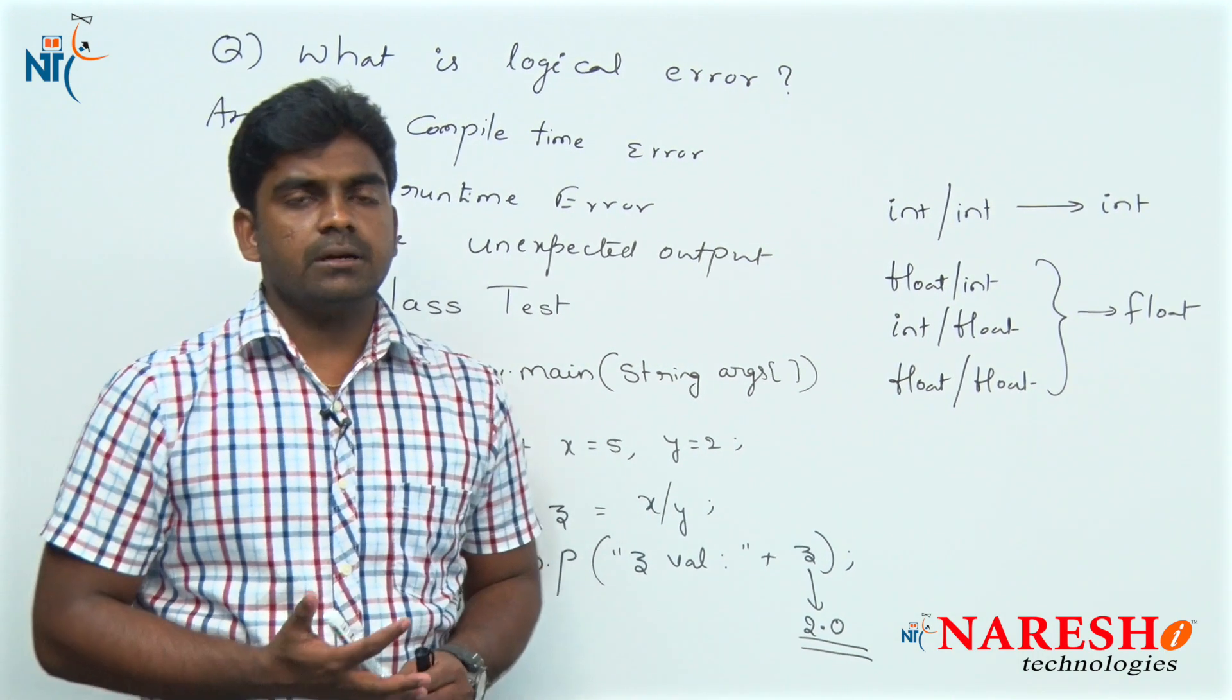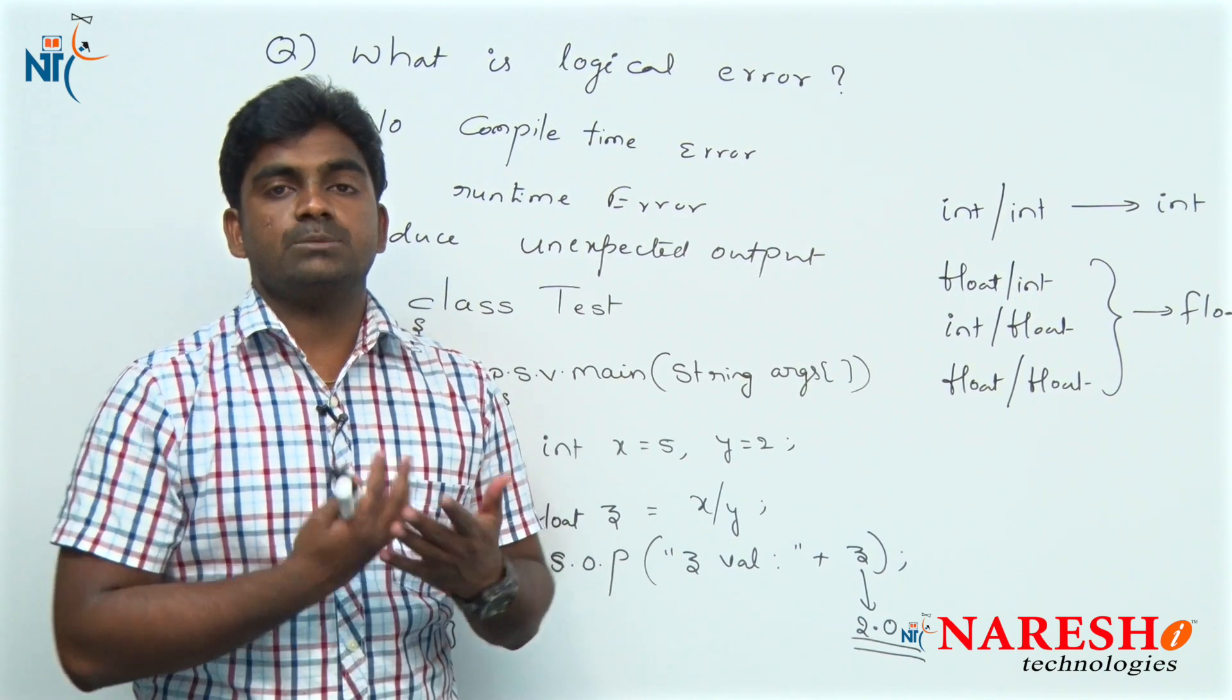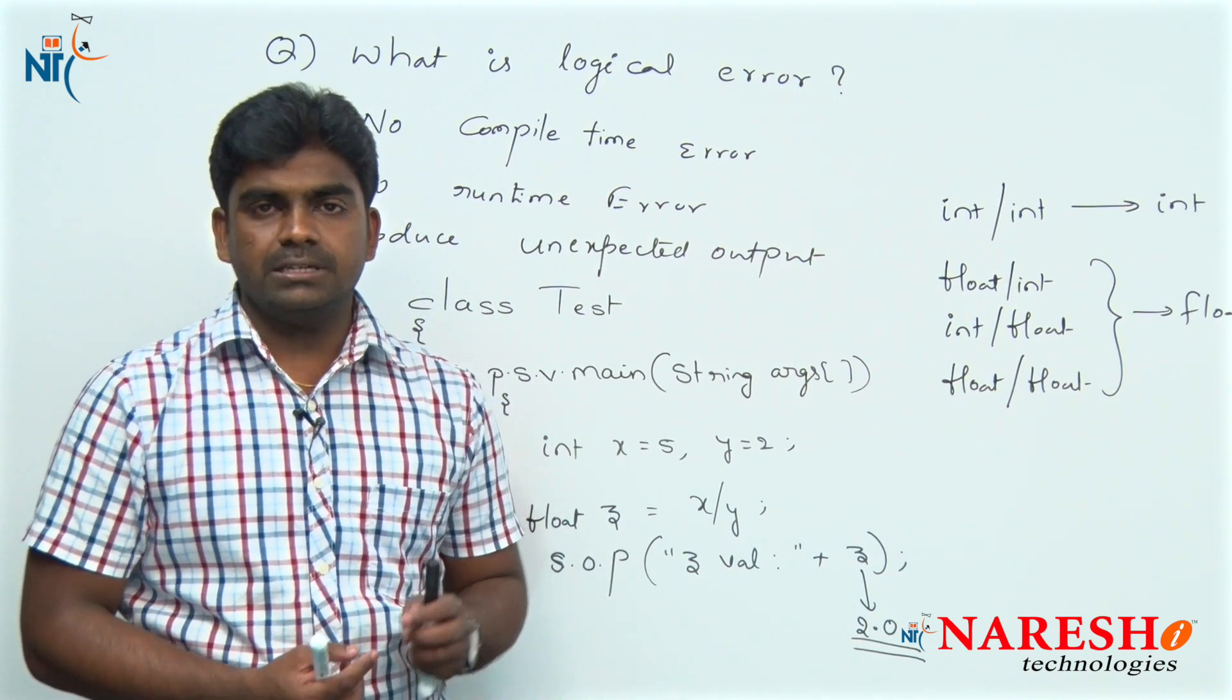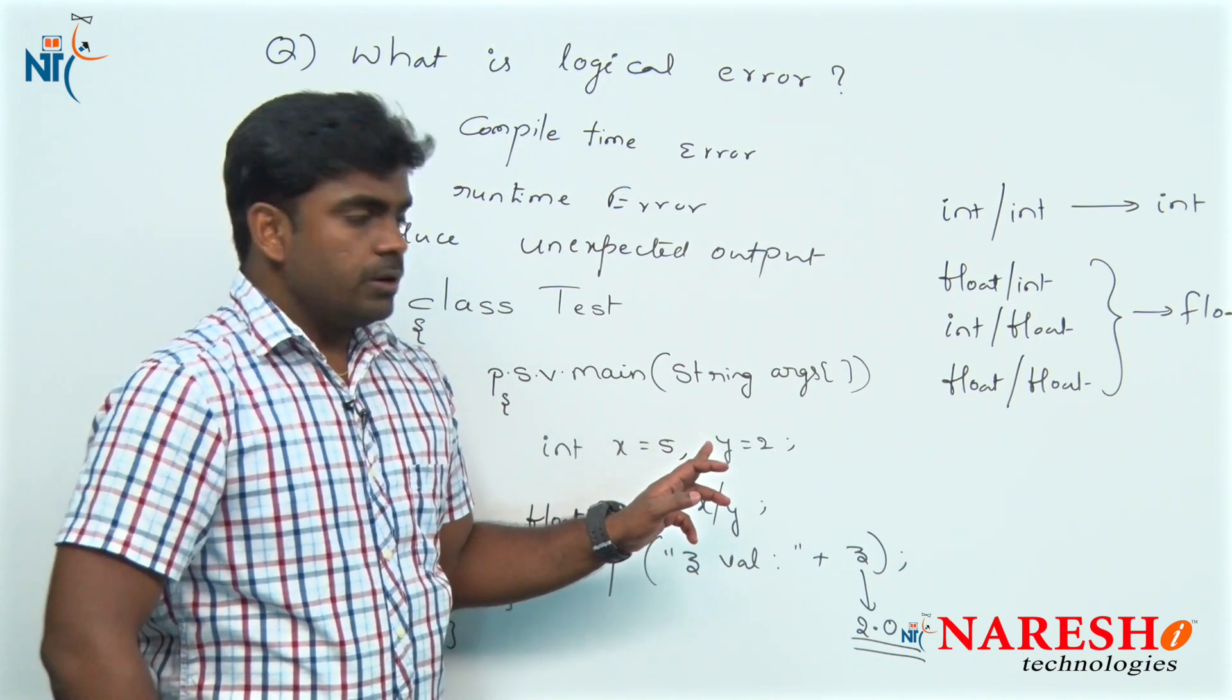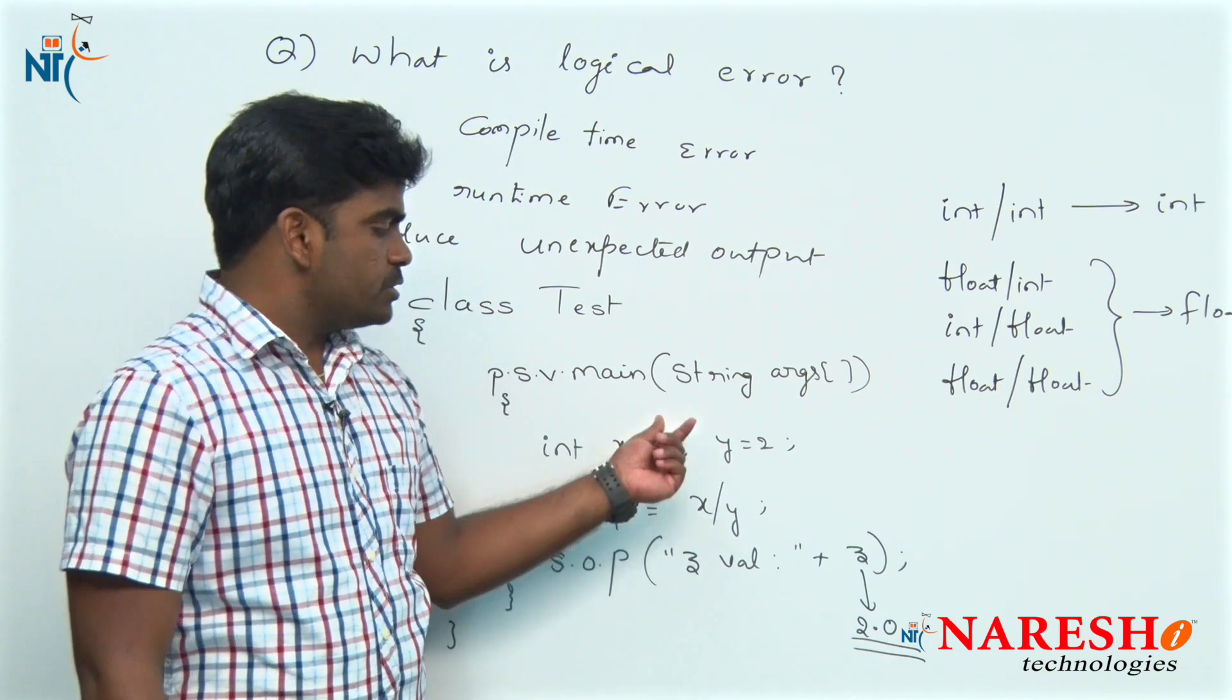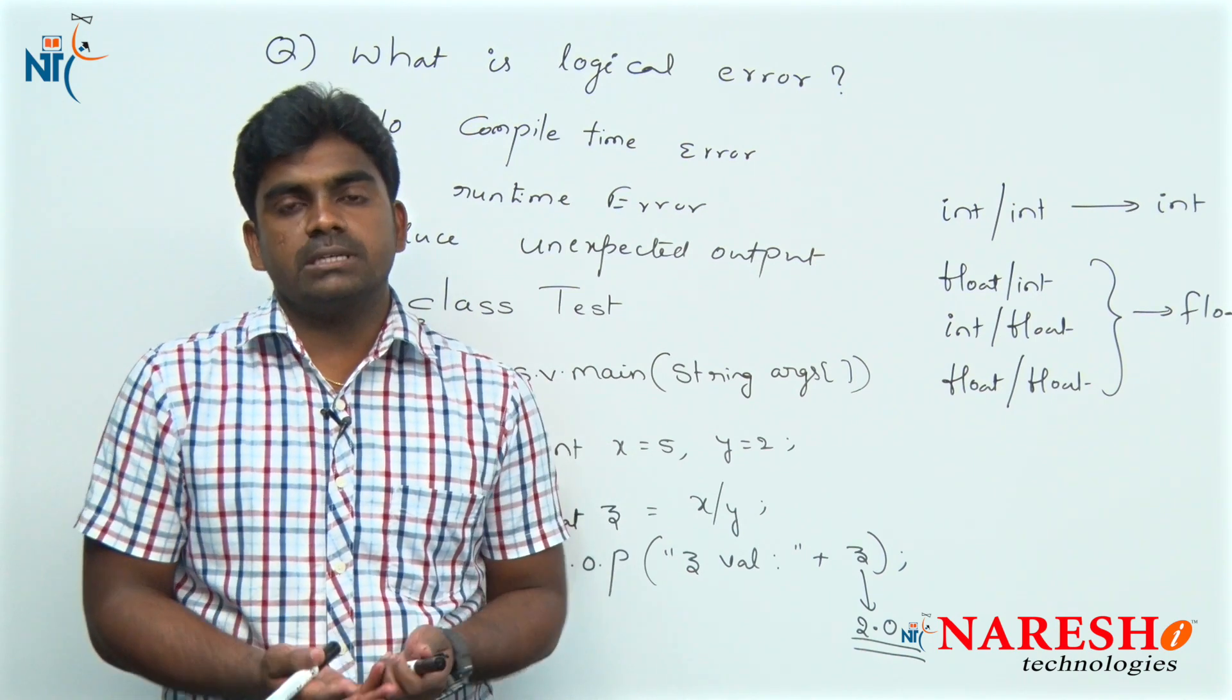Here it will not give any compile time error and it will not give any runtime error, but you are expecting 2.5 while it is giving 2.0. Then how can we solve this problem? It is logically incorrect - that is your problem. This is not the violation of a language rule and this is not the violation of a JVM rule. This is simply a logical problem - your logic is incorrect.